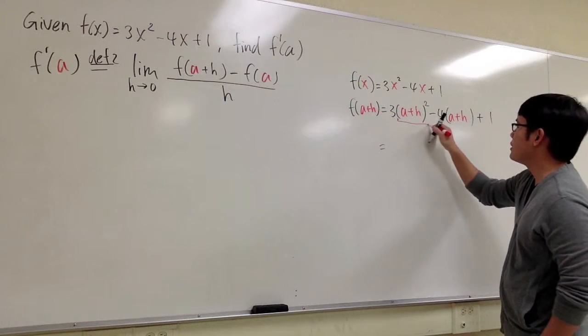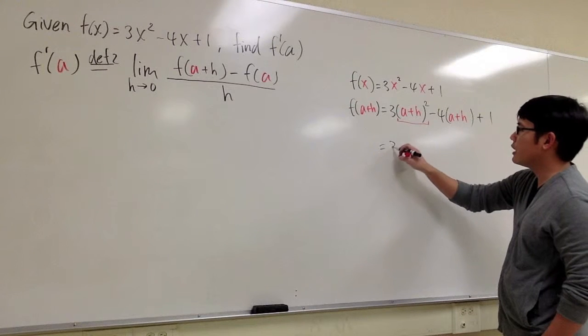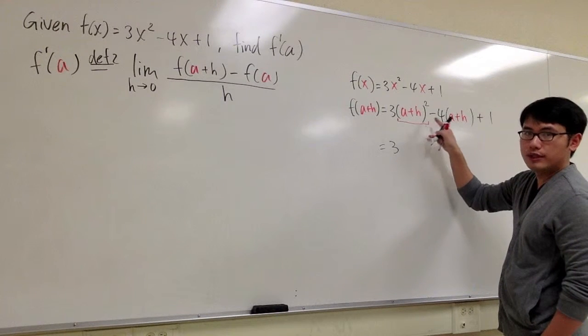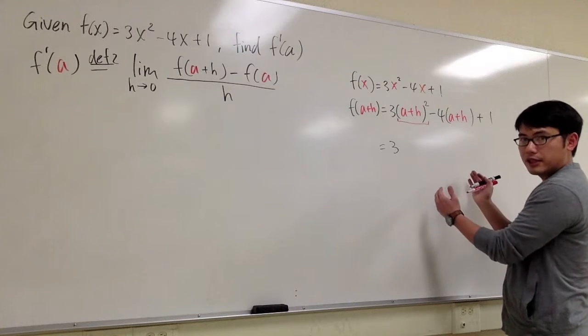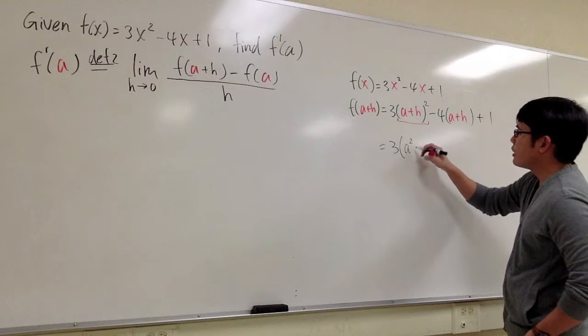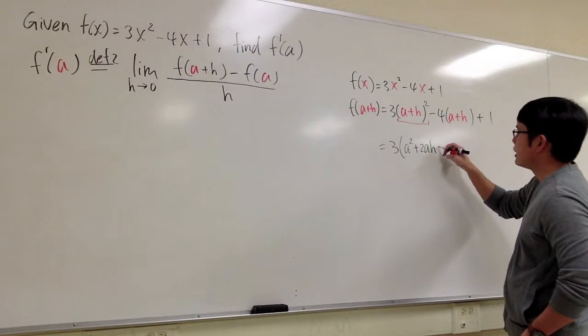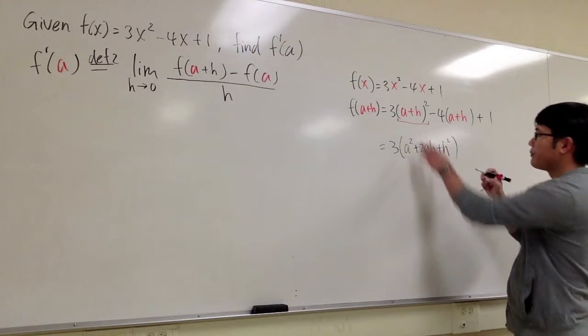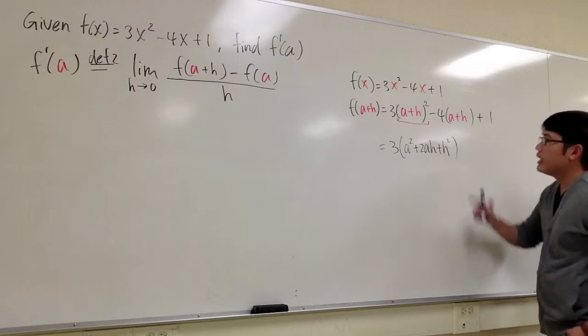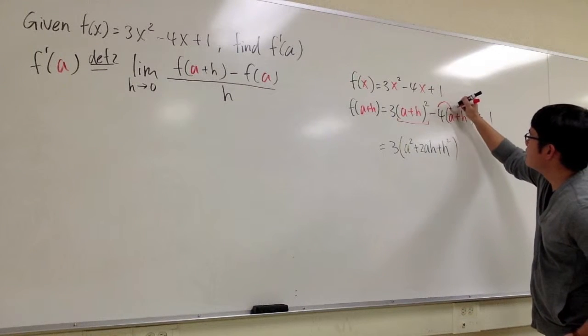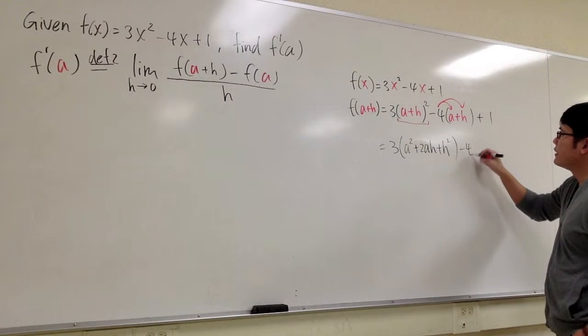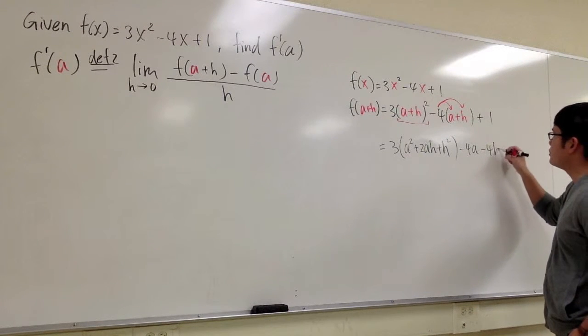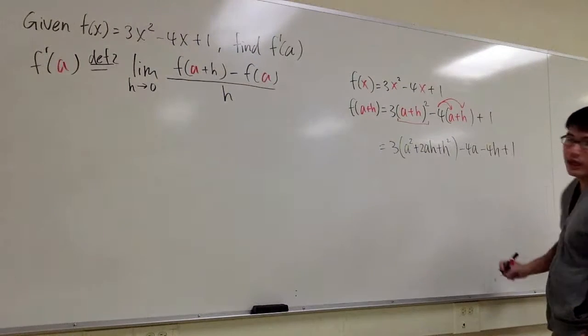And then we have the plus 1 after that. First, I will just write this down right here. We have the 3 right here, and then if you do (a+h)², multiply it out twice, like (a+h)(a+h), you end up with a² + 2ah + h², that's equal to this. And then for the second part, I can take this negative 4 and distribute it inside, which I will end up with -4a - 4h, and then we still have the plus 1 at the end.